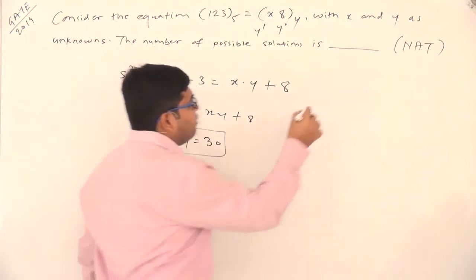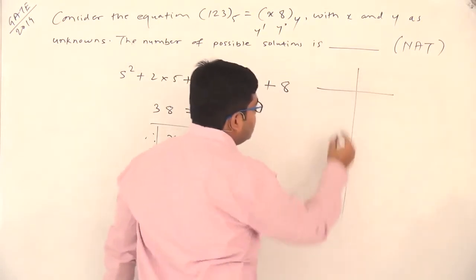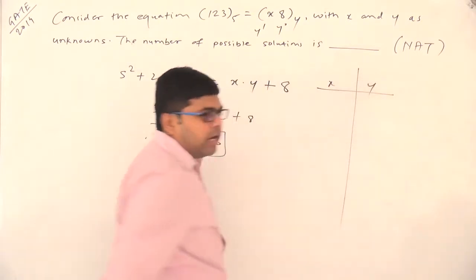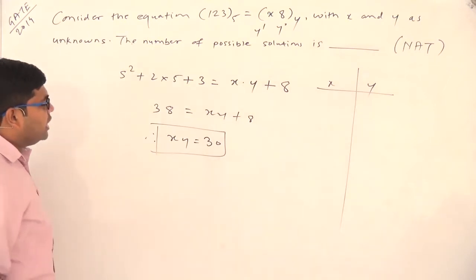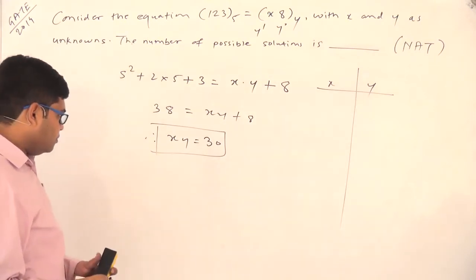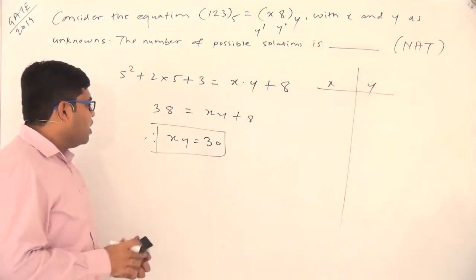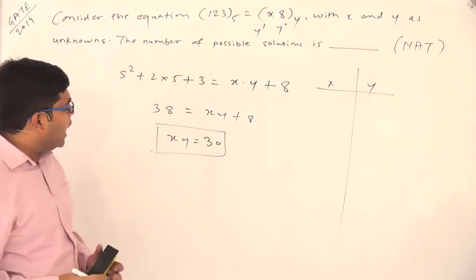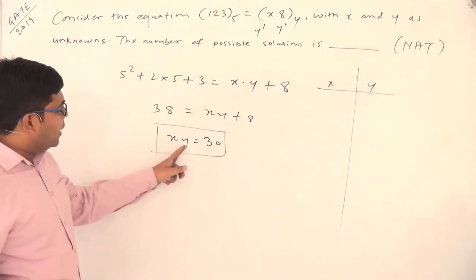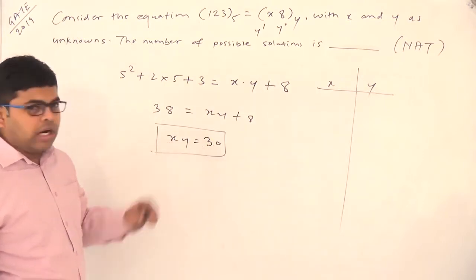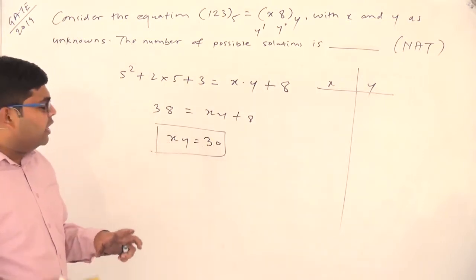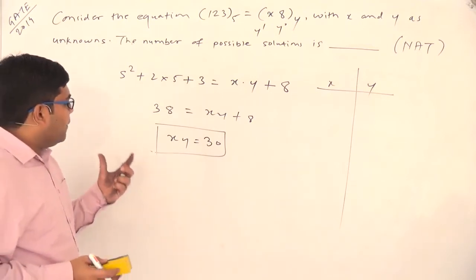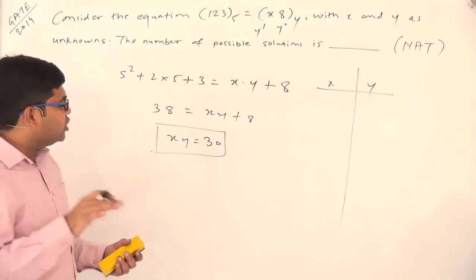What we will do is make a column for x and y. Now mathematically, if you look at x multiplied by y equals 30, then infinite solutions are possible. But here there are some restrictions on the values of x and y.